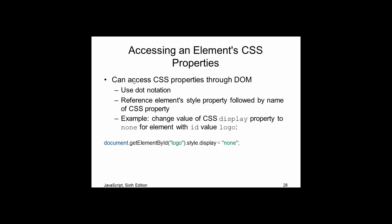Once you've selected your markup, one thing you can do is change its style using .style notation — for example, targeting an ID of 'logo' and setting style.display to 'none.' All CSS properties are accessible through this style attribute. Stick to CSS2 properties to ensure broad support. You can change colors, font sizes, and display values like inline, block, or none.